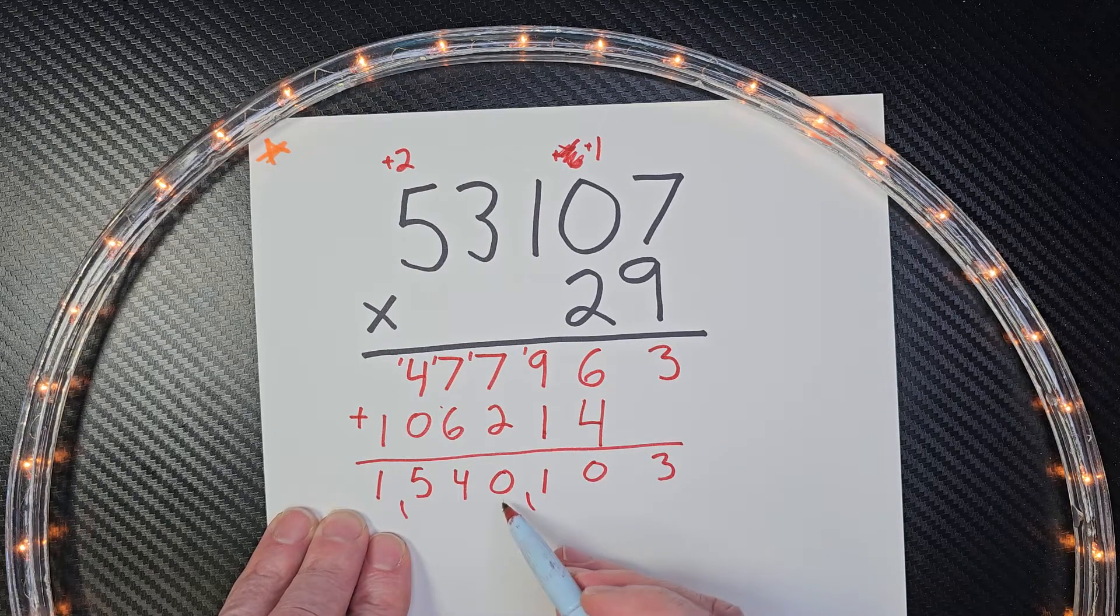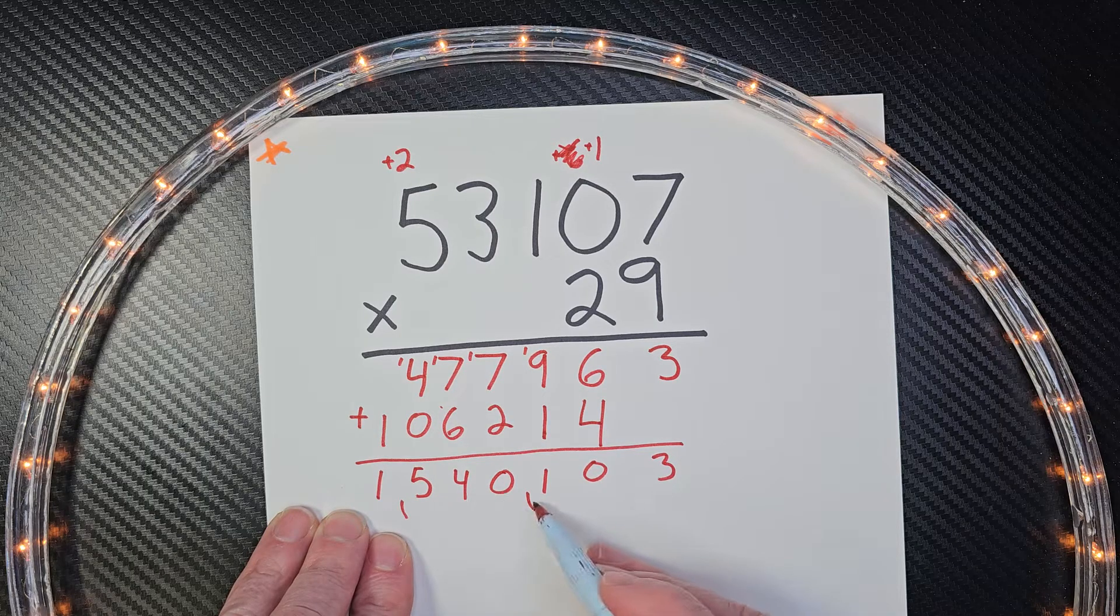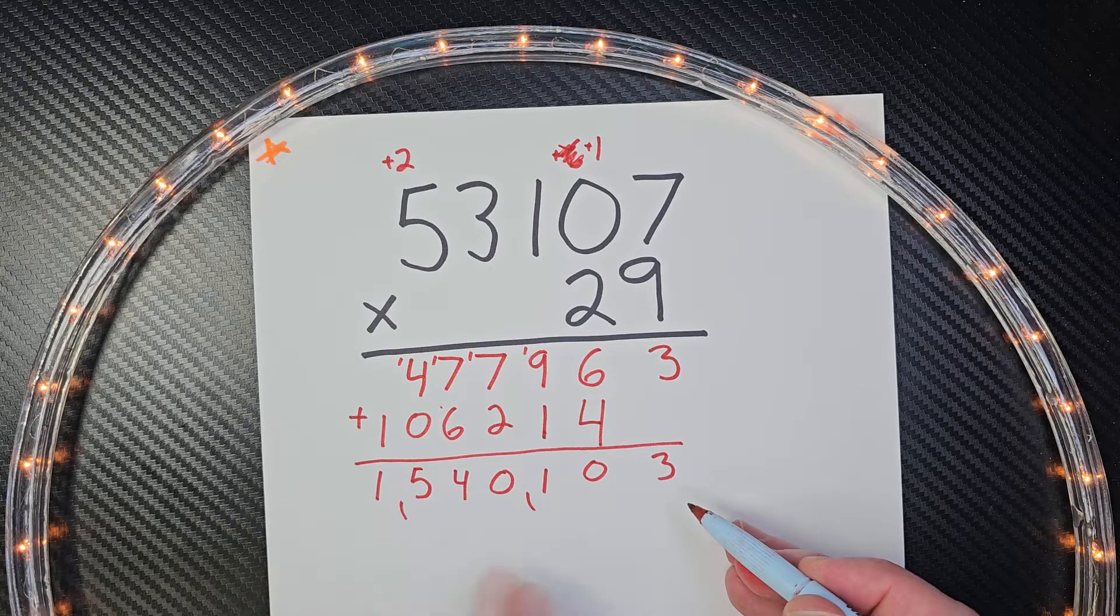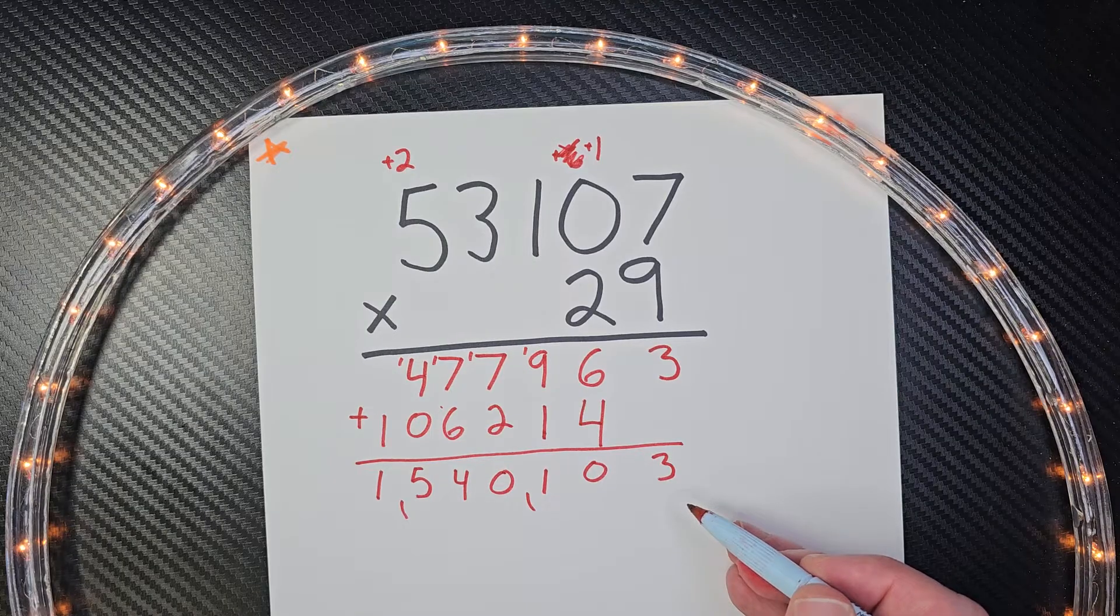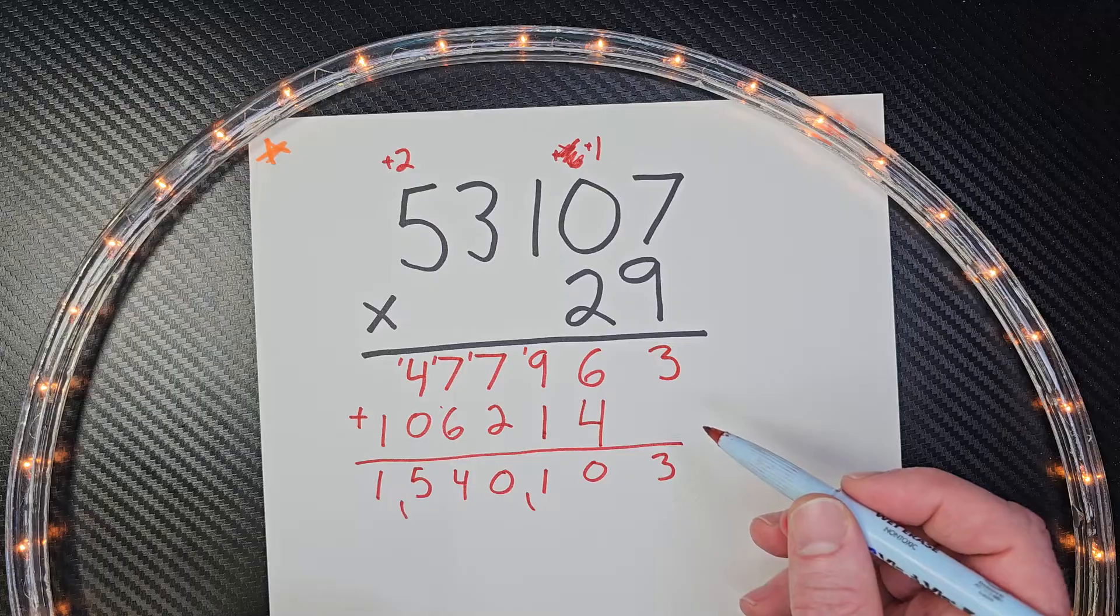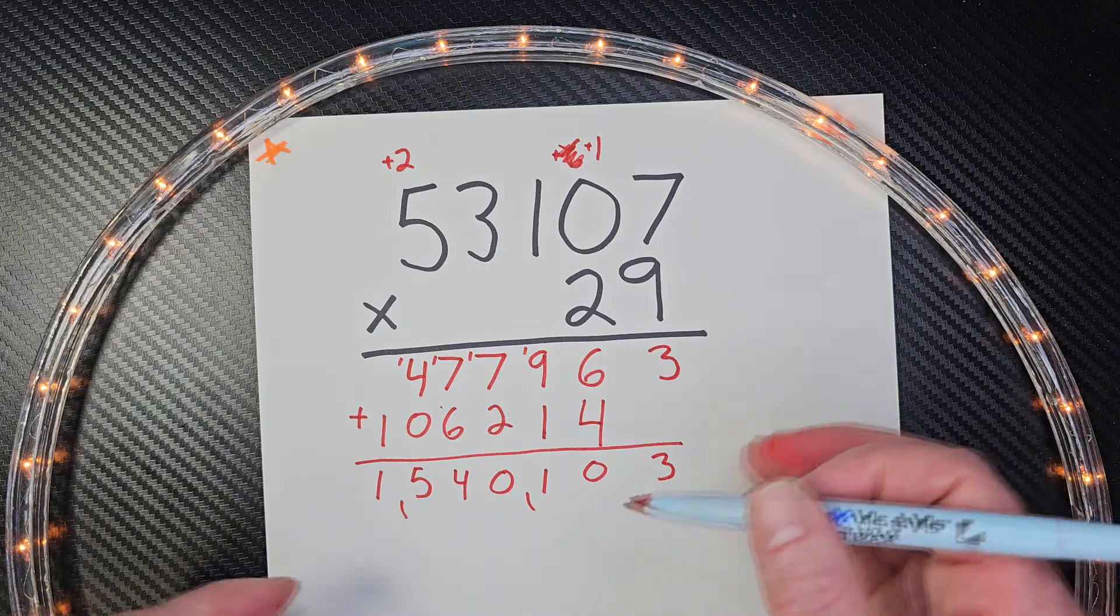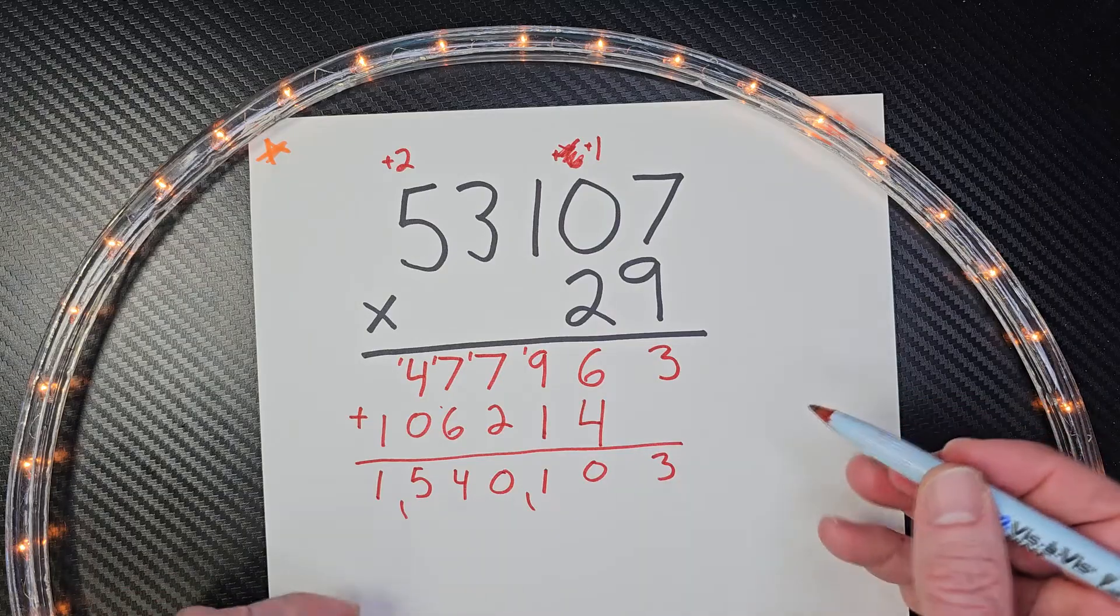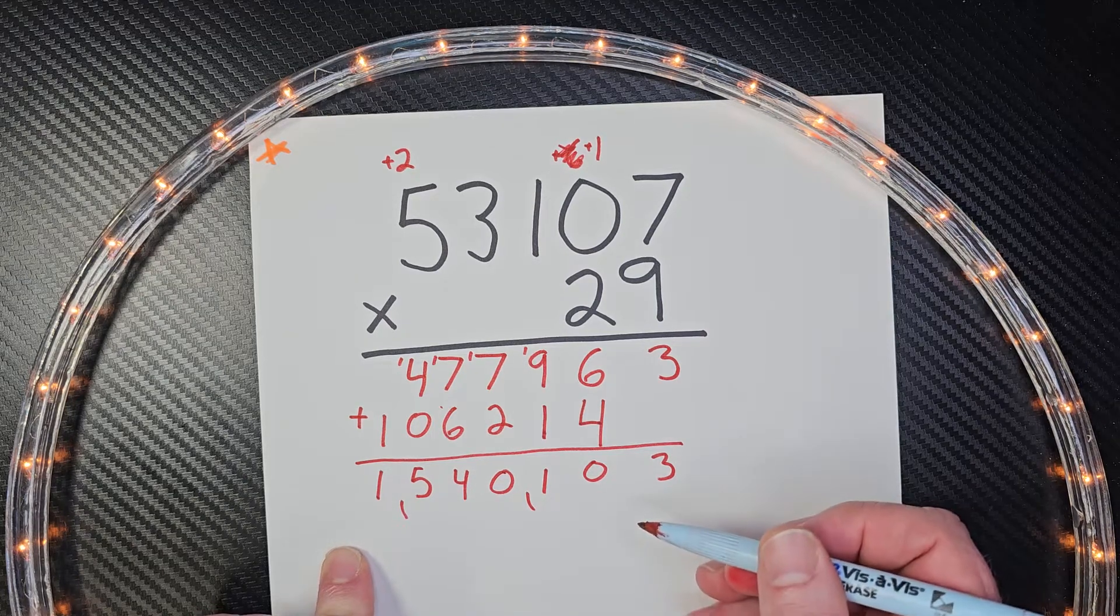So here is our answer. We have, can you say that? That is one million, five hundred forty thousand, one hundred three. Now don't say the word 'and' in that problem. Sometimes I accidentally do say that, but when you say the word 'and,' like if I were to say fifty-three and, or five hundred and thirty-one, sometimes that means like five hundred and thirty-one cents.